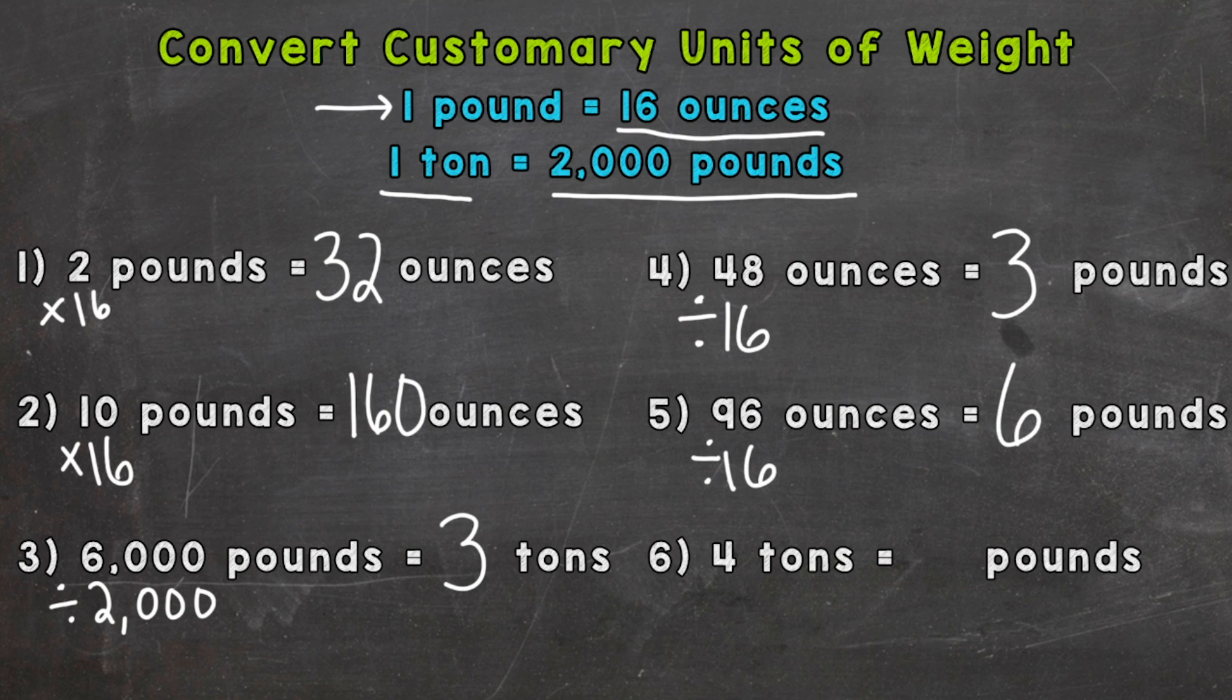Lastly, number six: 4 tons equals how many pounds. Well, 1 ton equals 2,000 pounds, so we have four of them - 2,000 plus 2,000 plus 2,000 plus 2,000.